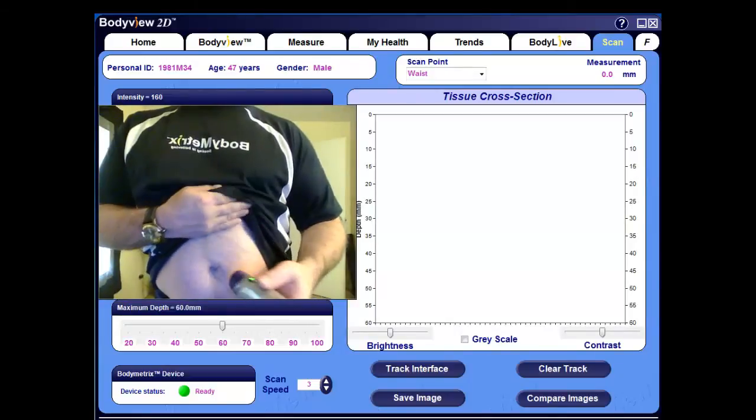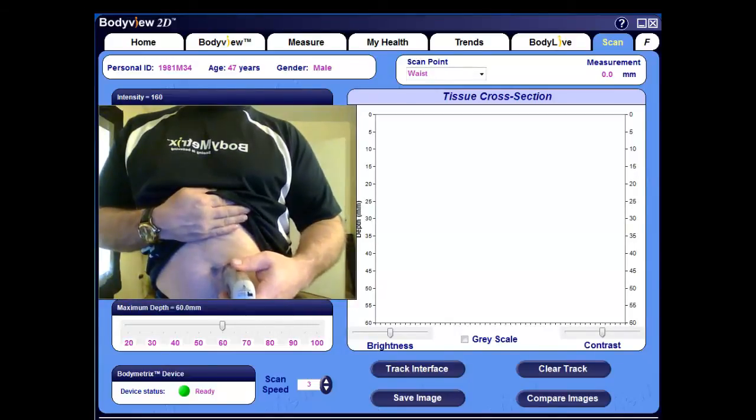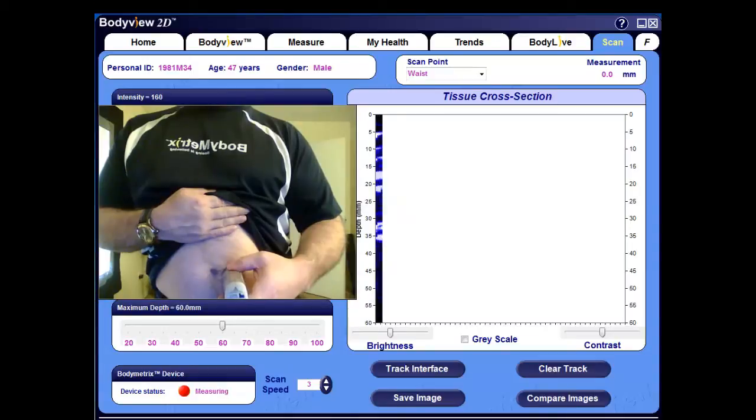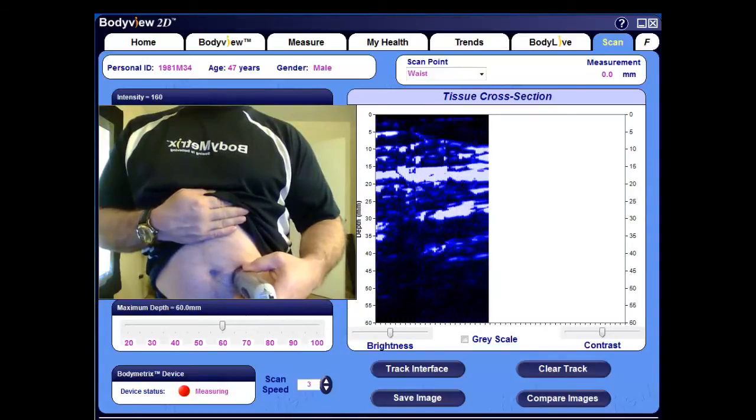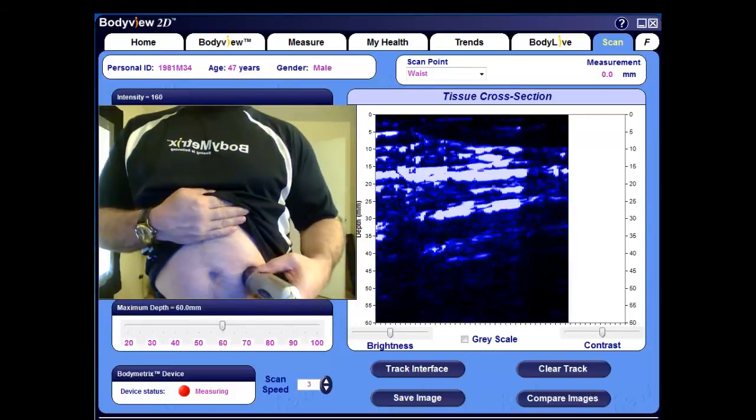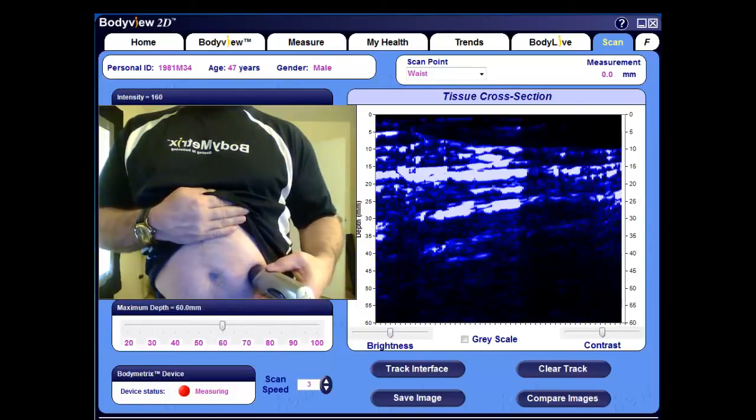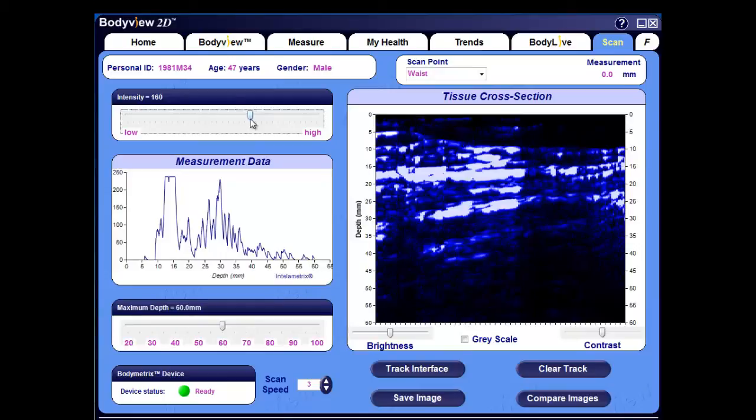When you're ready to start the scan, go back to your starting point one inch to the right of the belly button, press the button on the BodyMetrics device, and slowly drag the device in a smooth fluid motion three to four inches towards the right side of the body, making sure that the device is flush and perpendicular on the skin. This should take approximately four to five seconds.